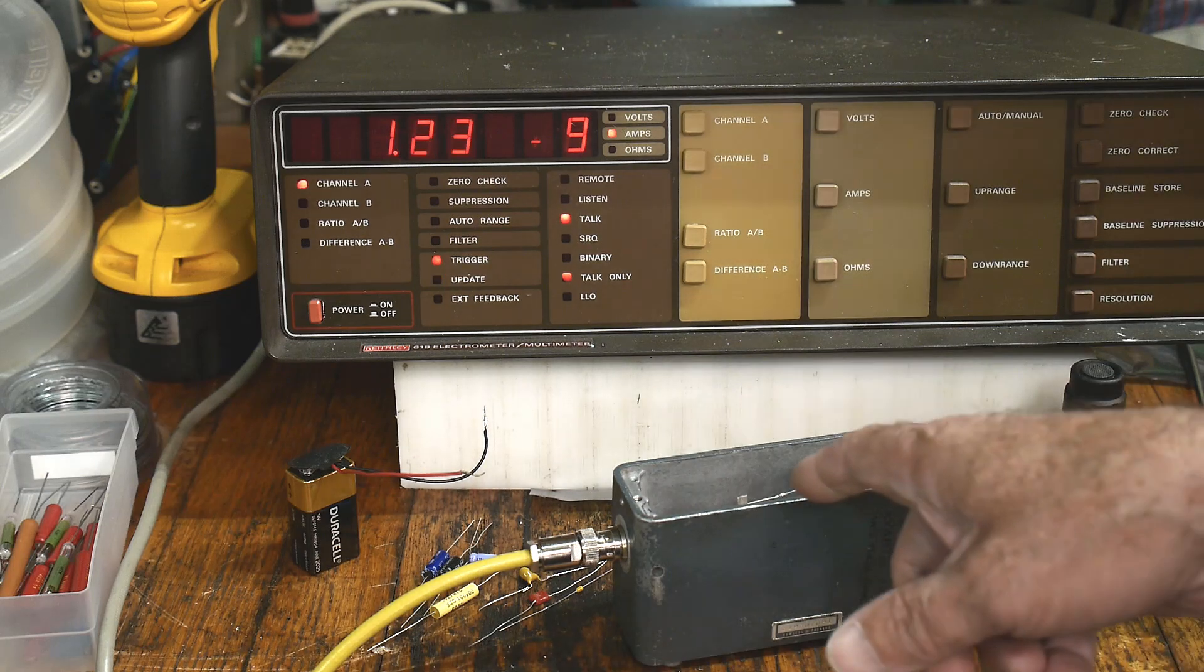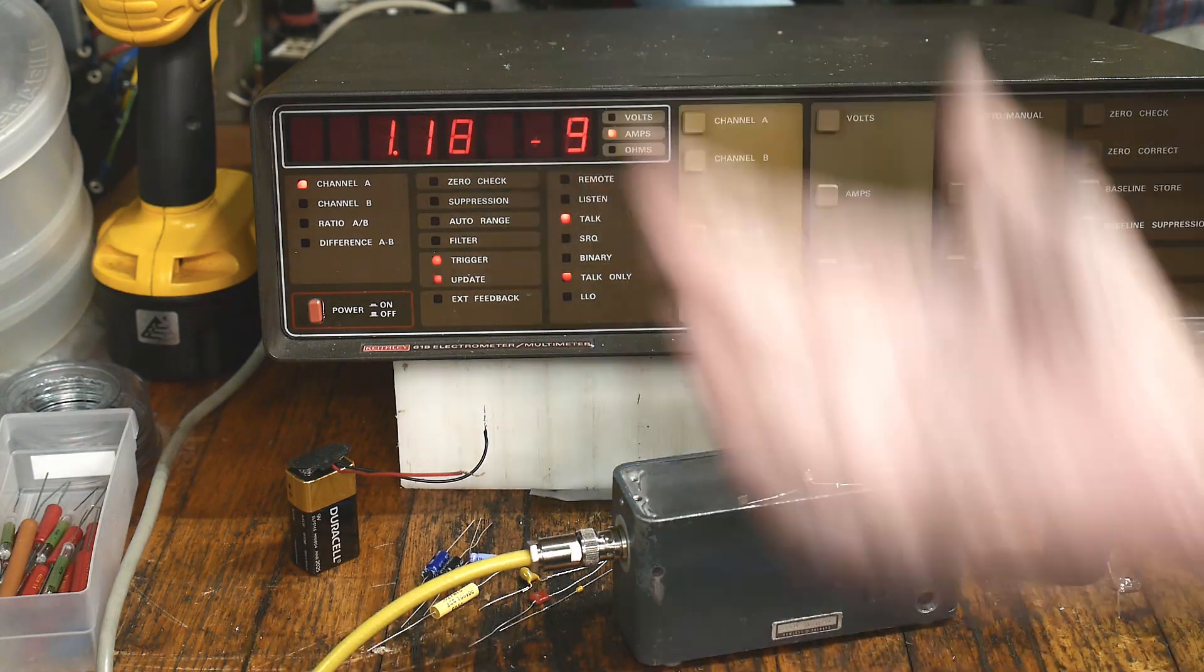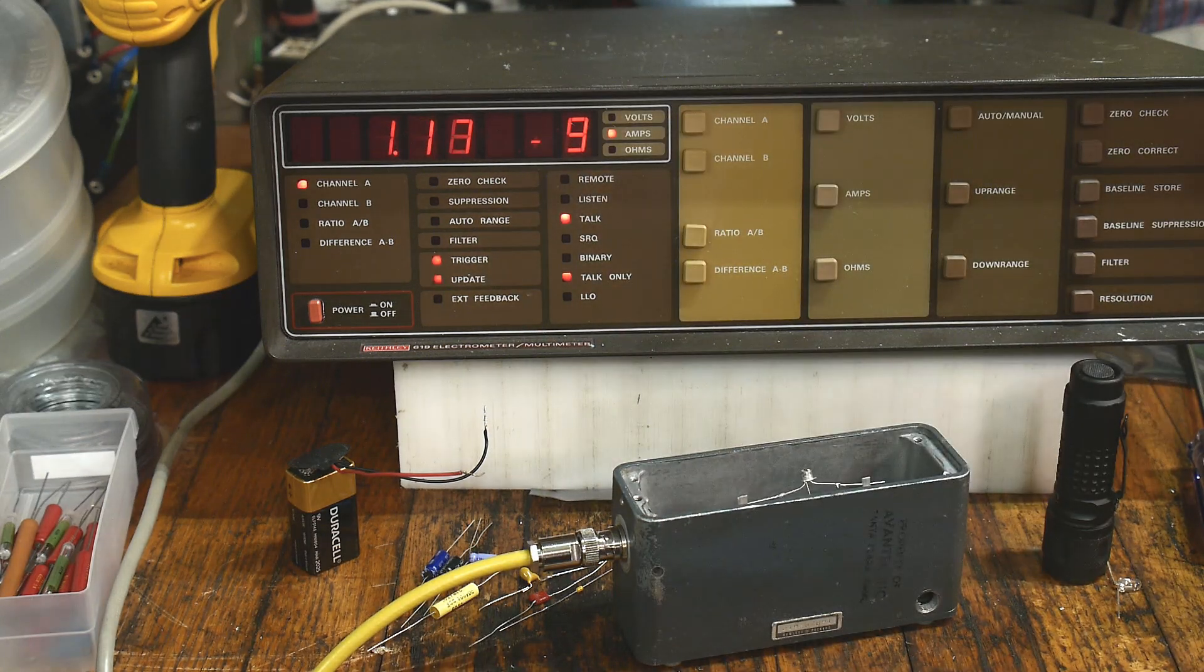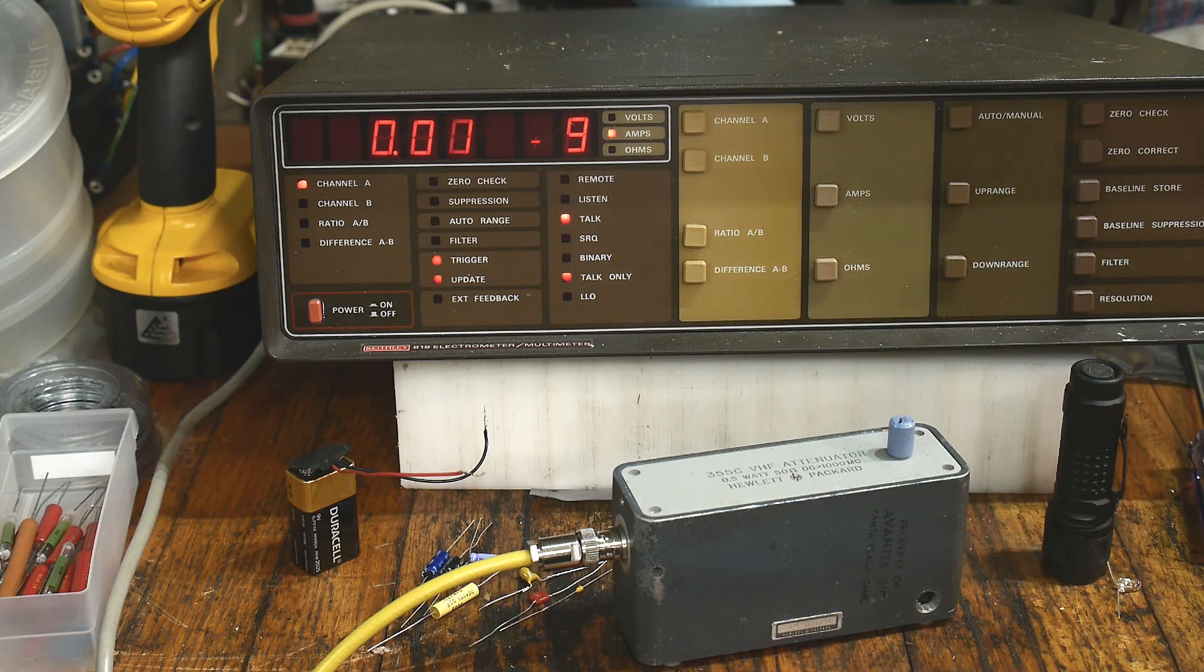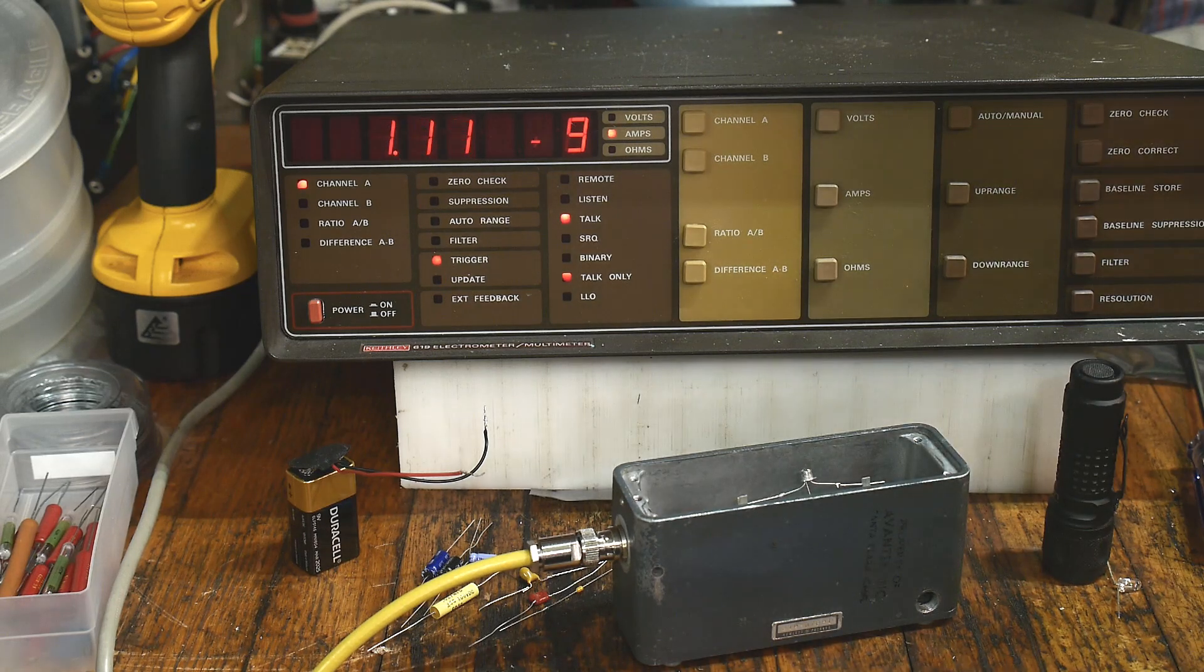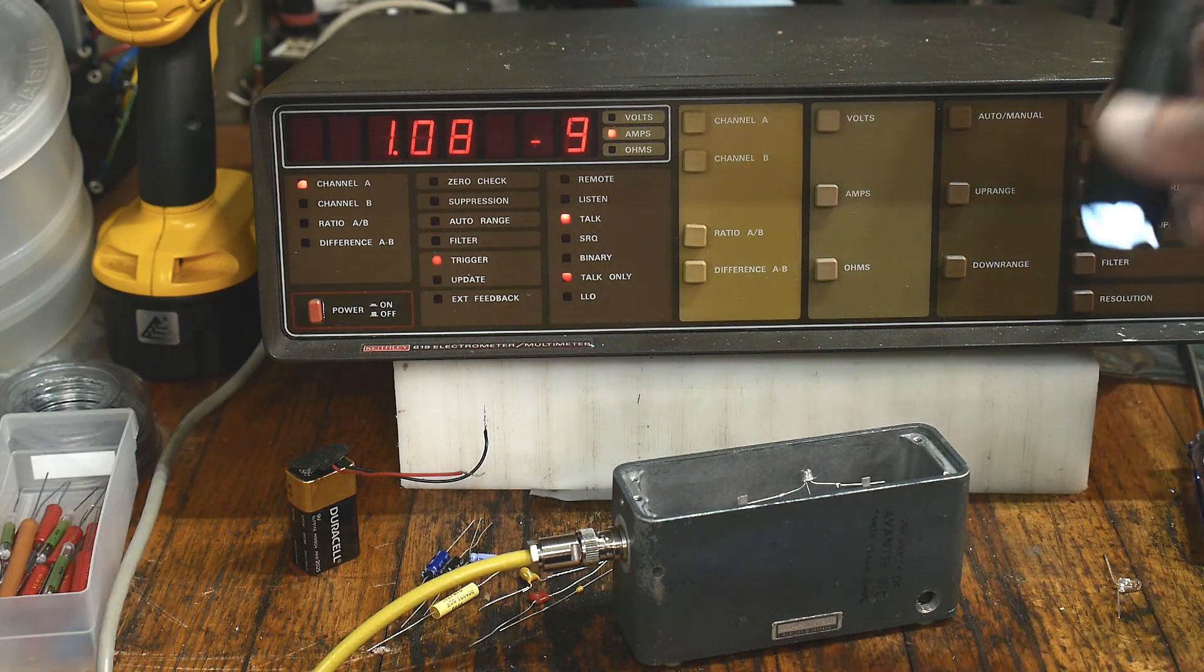And we're measuring 1.3 nanoamps. If I put the lid on it and zero it, it is photocurrent. And if I bring over my trusty flashlight, look at that, overflow.